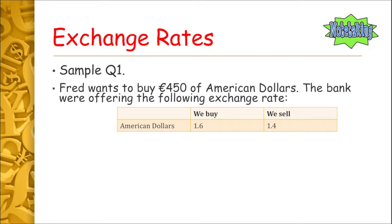In sample question one, Fred wants to buy 450 euro worth of American dollars. The bank is offering the following exchange rate: we buy 1.60 American dollars and we sell 1.40 American dollars. This means the bank will buy American dollars off you and give you one euro for every one dollar sixty of American dollars you give them.